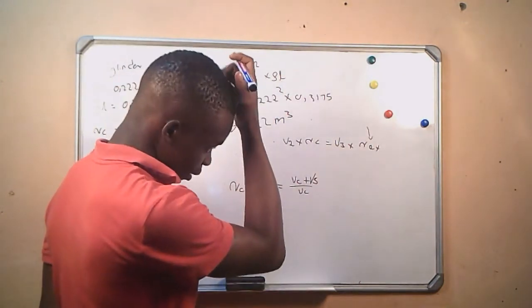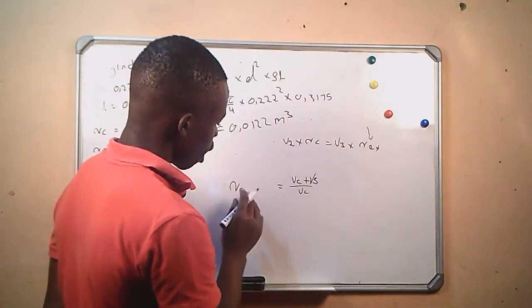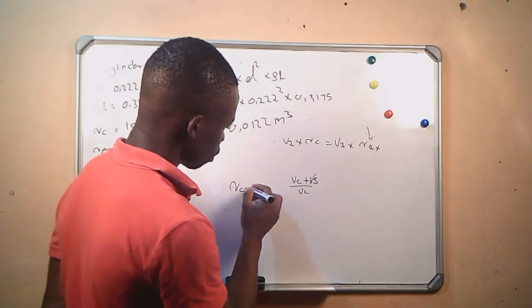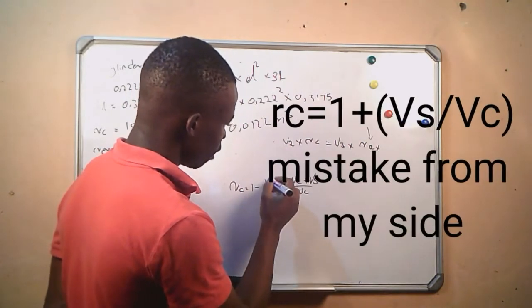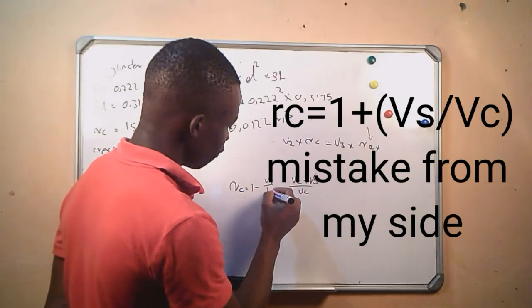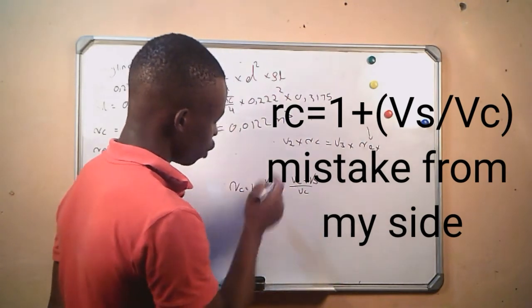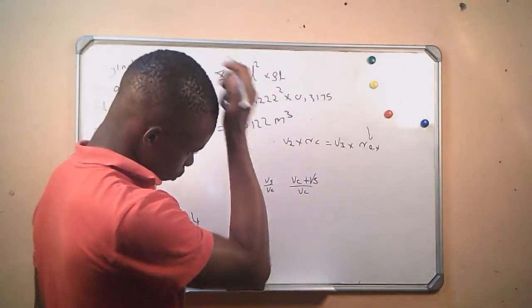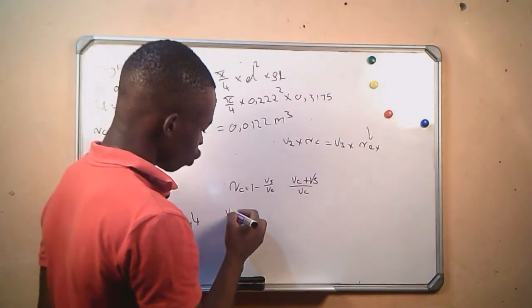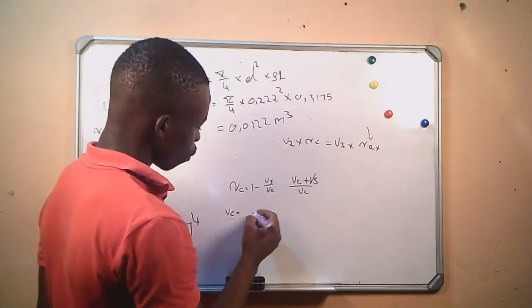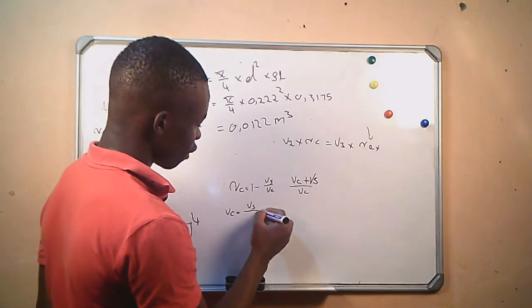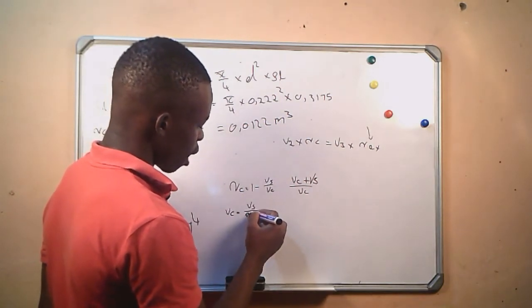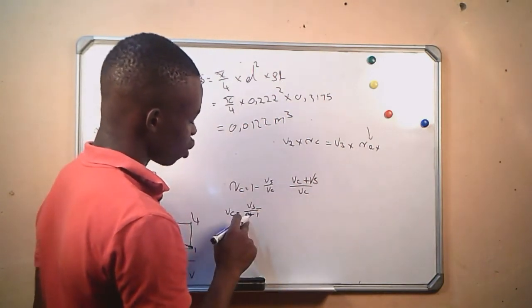From here, we find that the compression ratio R equals (Vc + Vs)/Vc. To get our clearance volume, we rearrange to get Vc = Vs/(R - 1), where R is our compression ratio.